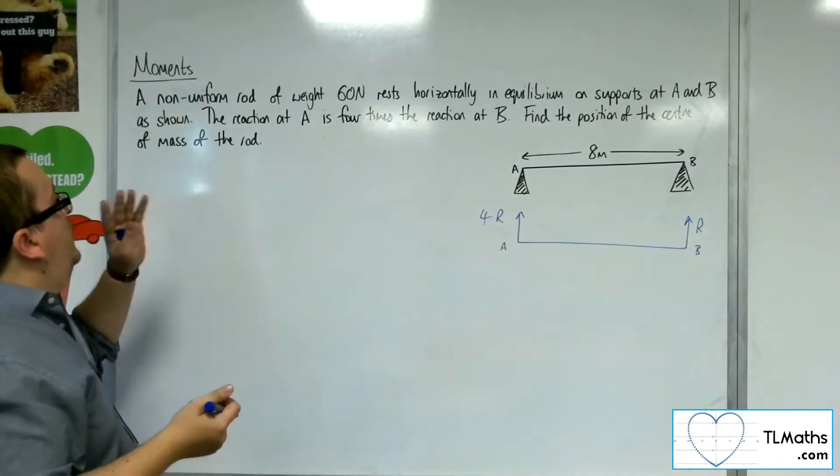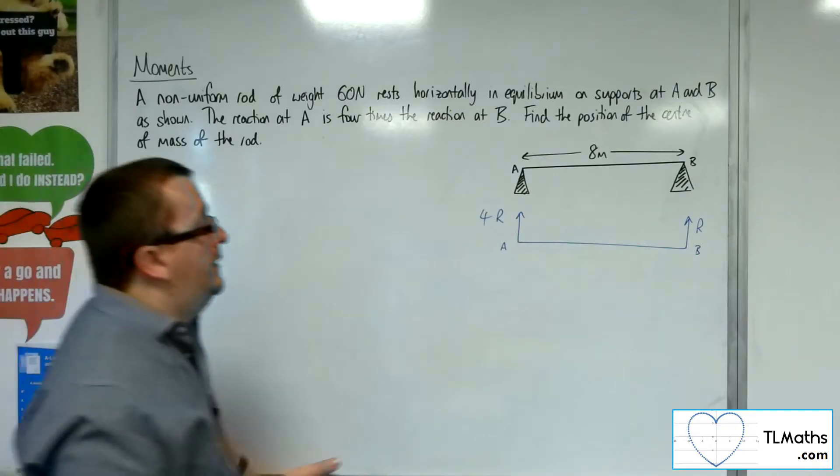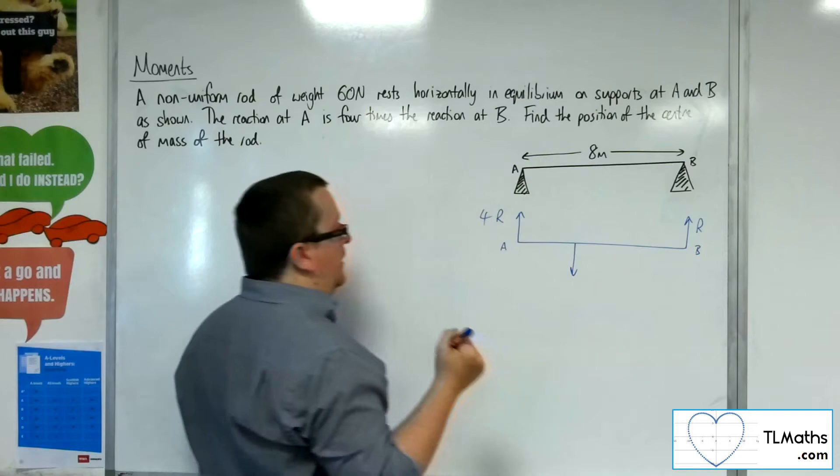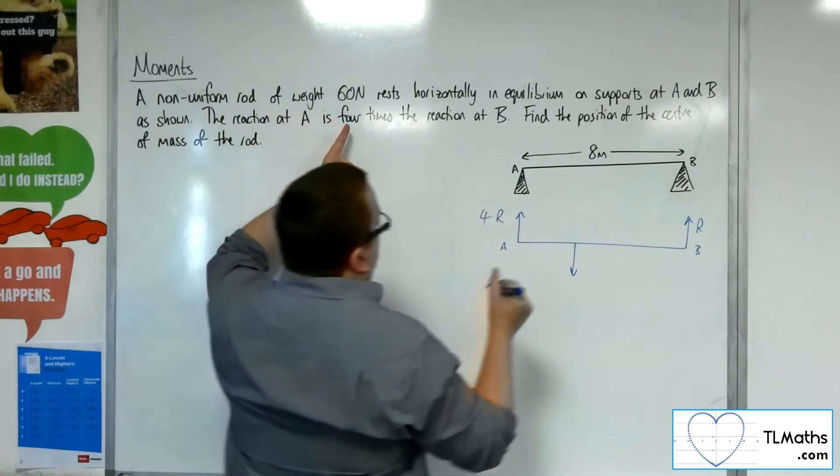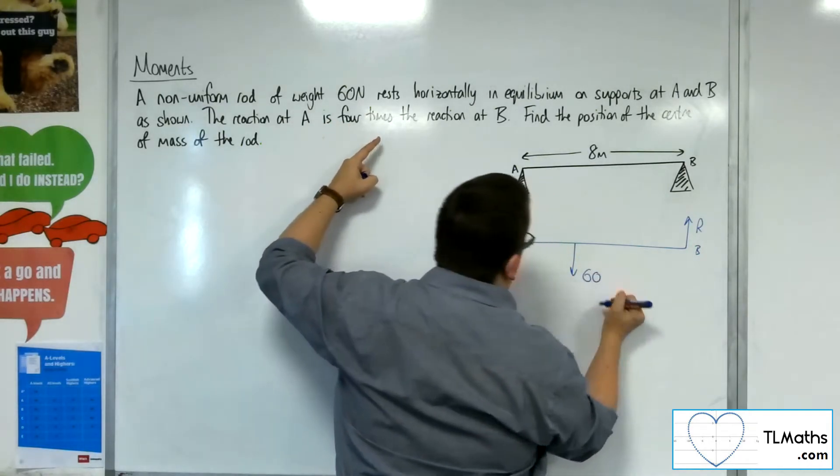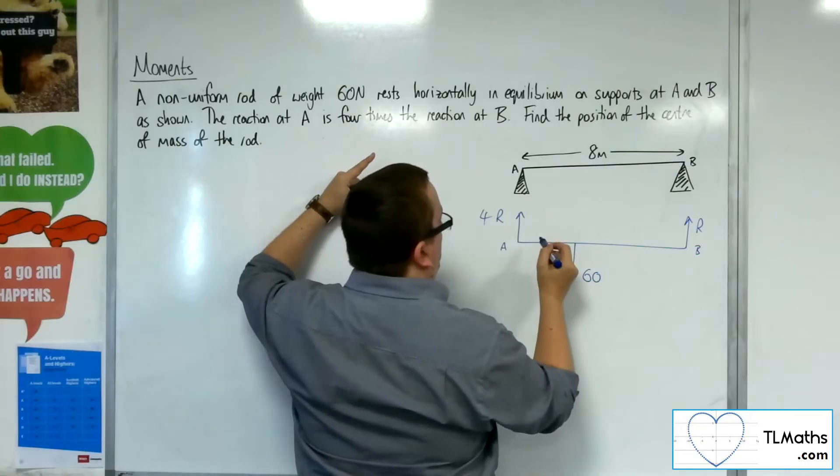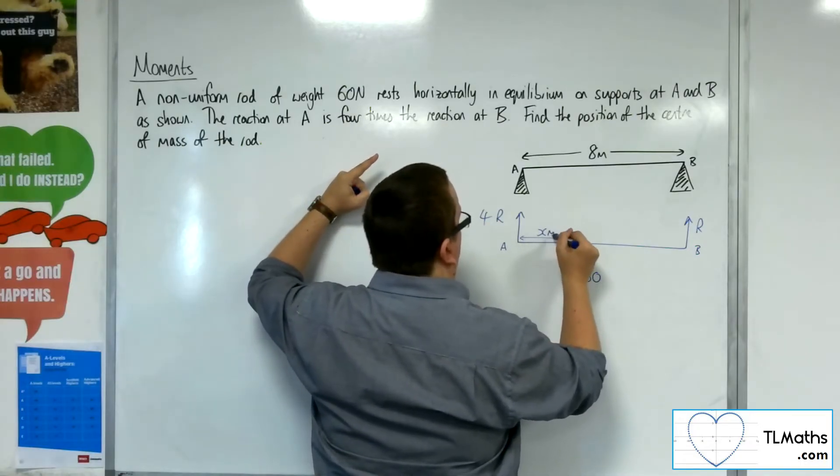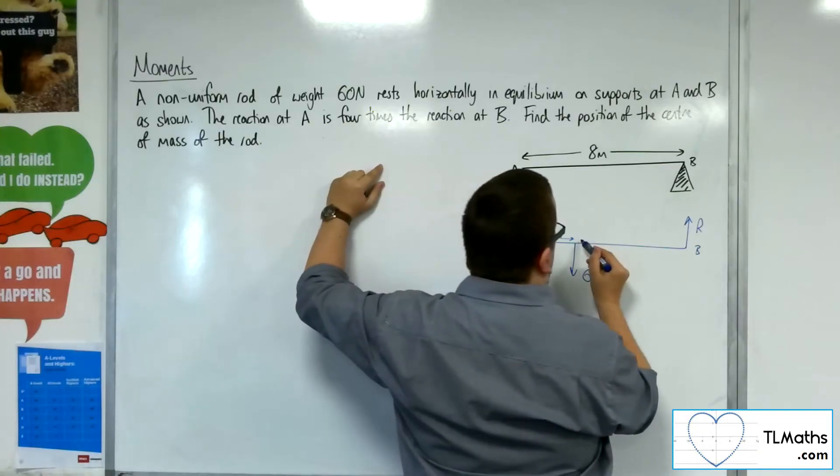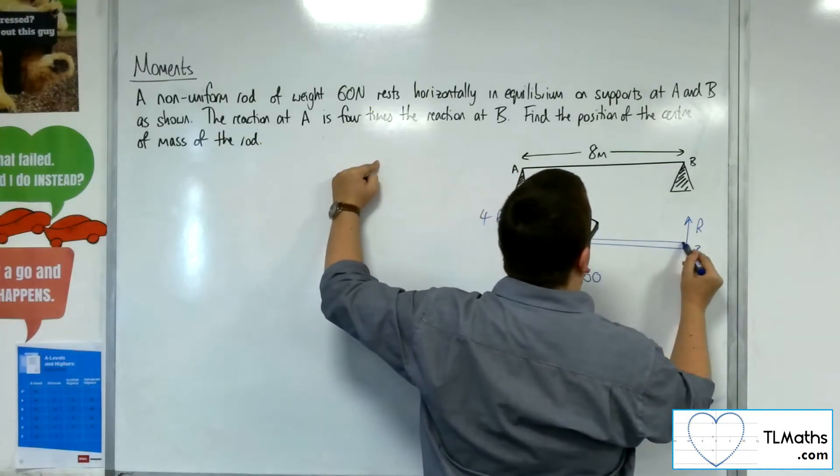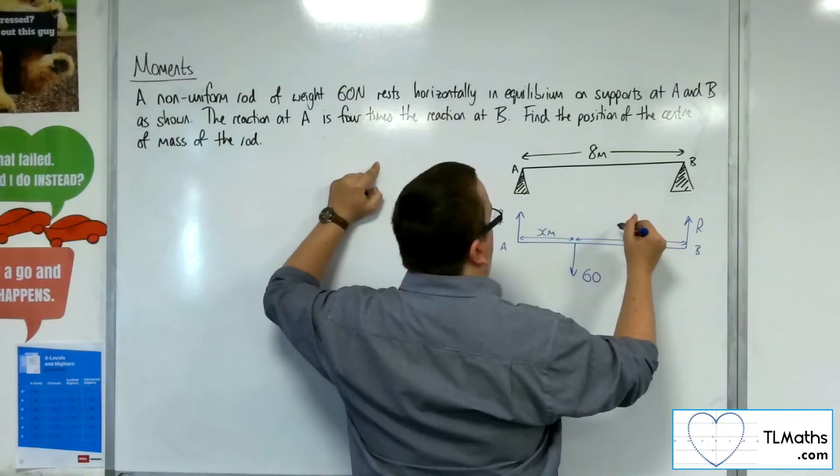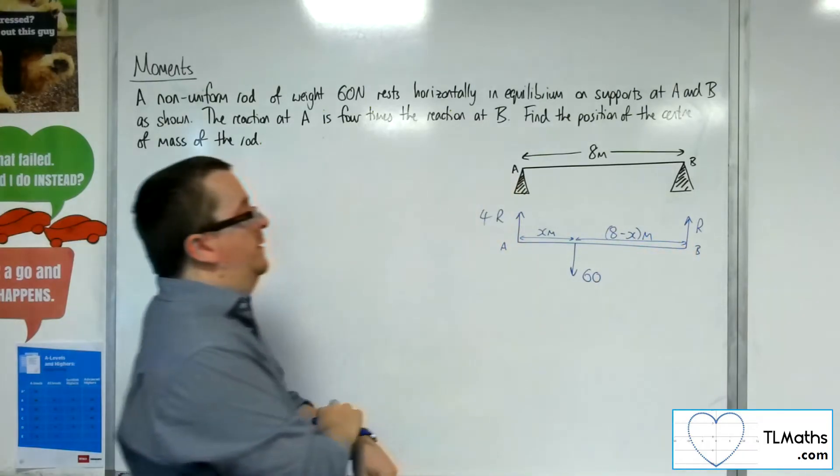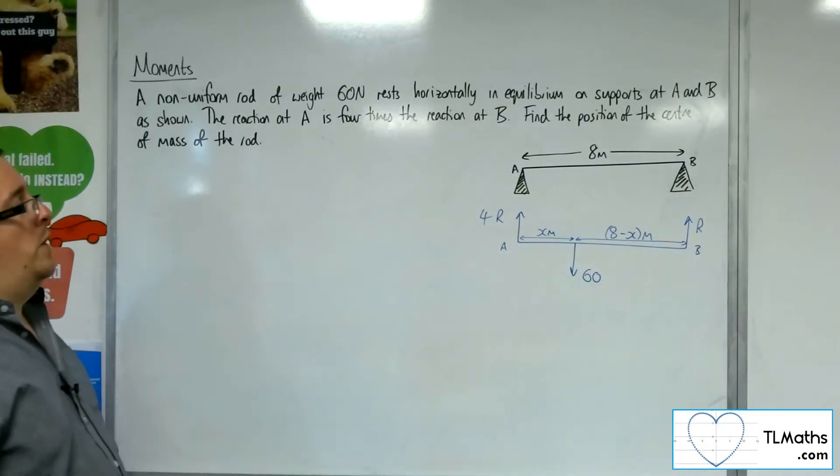Now we don't know where the centre of mass is. So I'm just going to pop it here for the time being. And it's got this weight of 60 newtons. And let's call that x metres. So this distance will be 8 take away x metres. So this is my diagram.